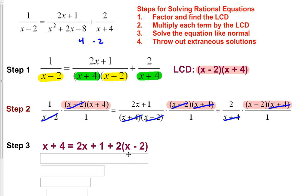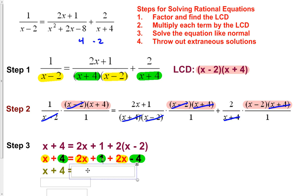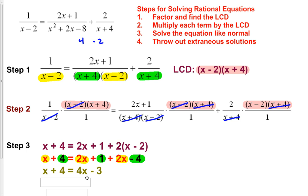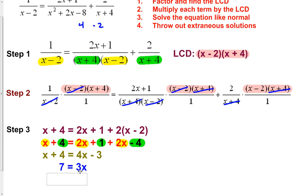The last term gives 2 times the quantity x minus 2. We distribute on the right side and collect like terms. On the left we have x plus 4. On the right, collecting like terms gives 4x minus 3. Getting all terms on the same side: add 3 to both sides and subtract x from both sides, leaving us with 7 equals 3x. Dividing both sides by 3 gives x equals 7 thirds.